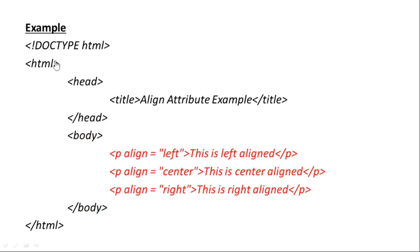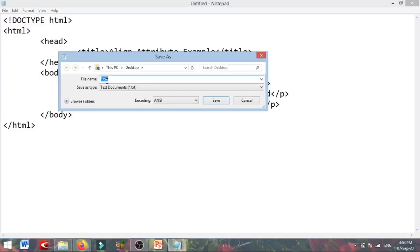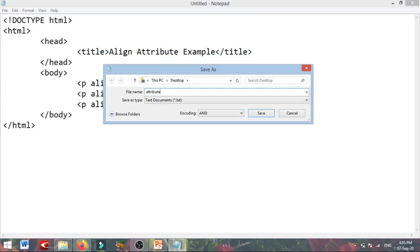For example, we have a sample code: DOCTYPE HTML, HTML, head, title — 'Align Attribute Example' — then title close, head close. Then we have a paragraph tag: open angle bracket P align equals left value — this is left aligned. Then P align equals center — this is center aligned. Then P align equals right — this is right aligned. Then body close, HTML close. We save the file as 'Attributes.htm' with encoding UTF-8, then save.